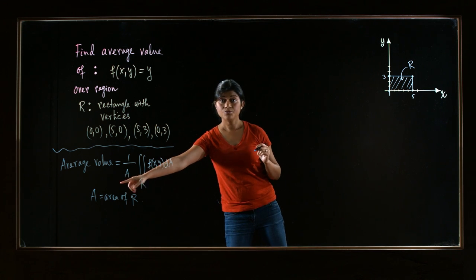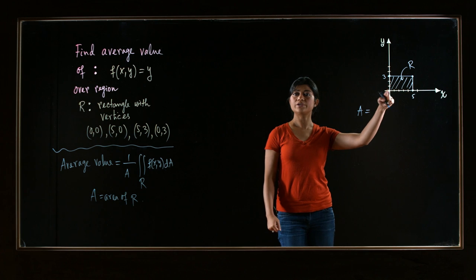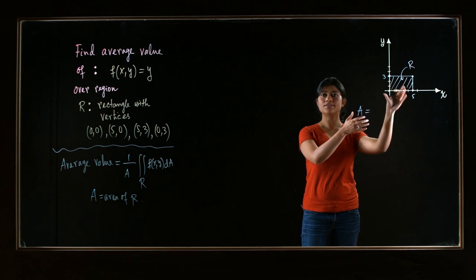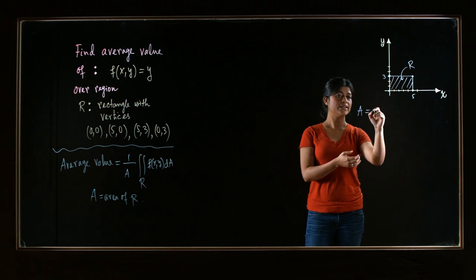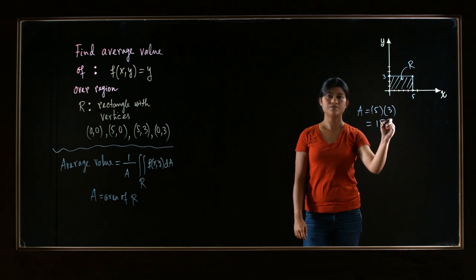Now we have to compute A, which is the area. So let's compute that right away. This is just a rectangle, so the area is length times width. As you see, length is 5 and width is 3, so area is just 15.